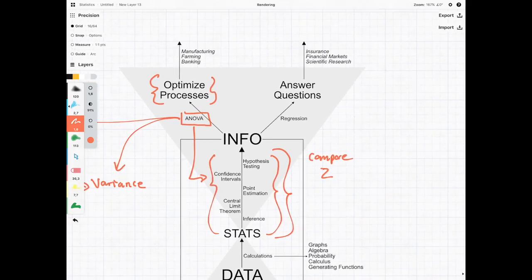ANOVA, however, lets us compare multiple things, whether it be three, four, five - we could even compare 10 different things with ANOVA.